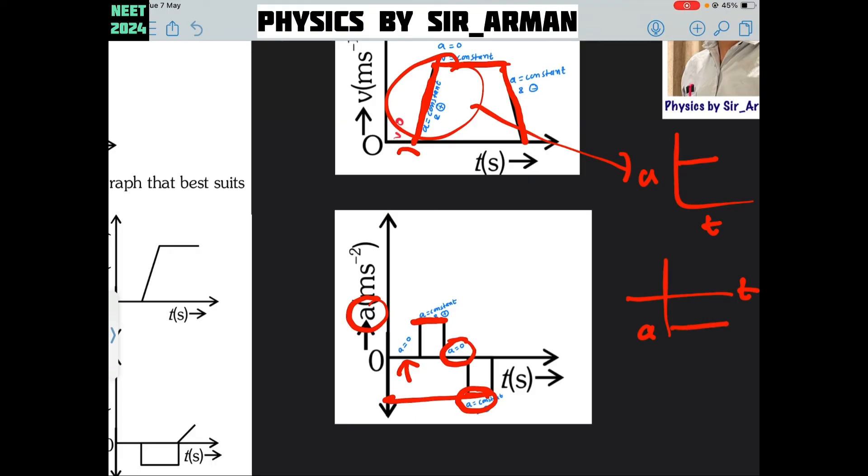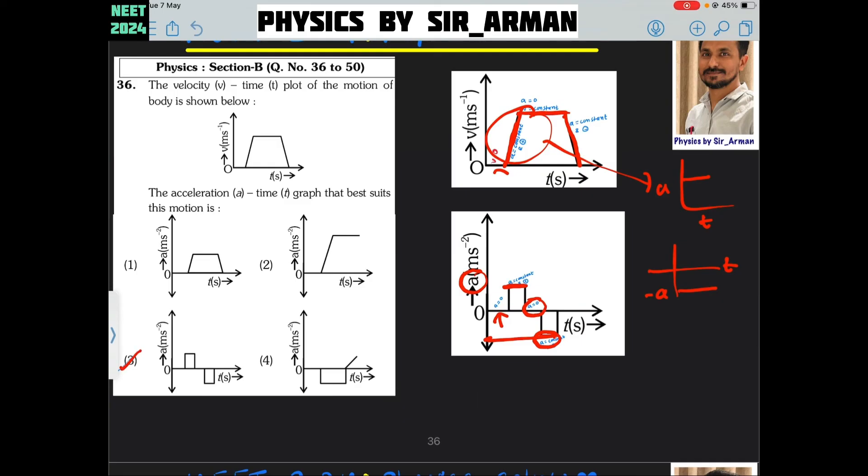It is represented like this. Acceleration is constant and it is negative. The correct graph or the correct option is option number 3.